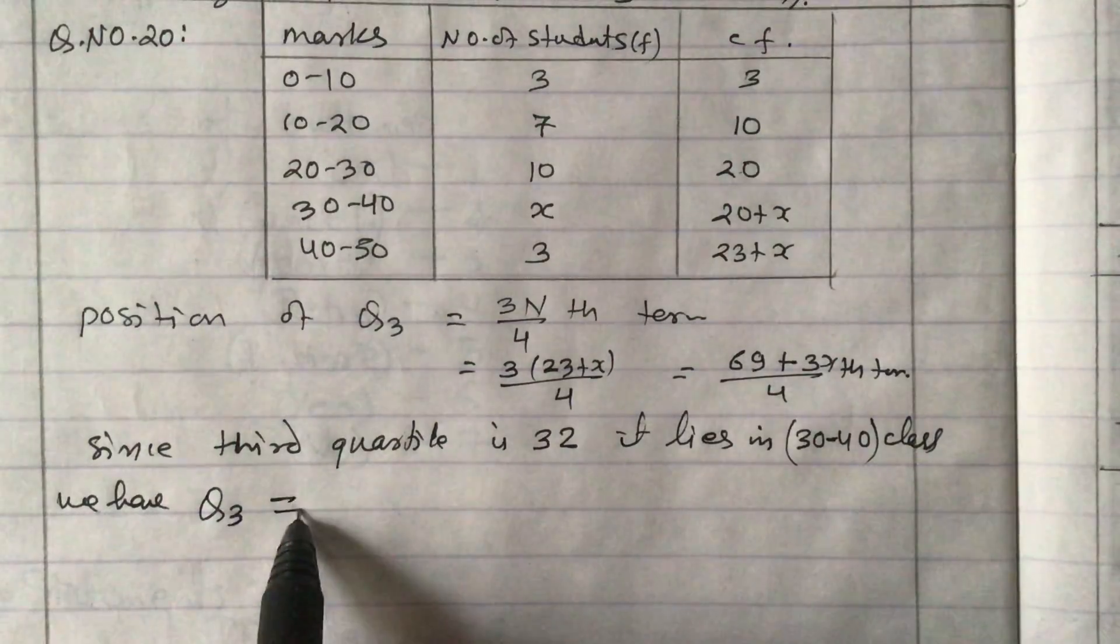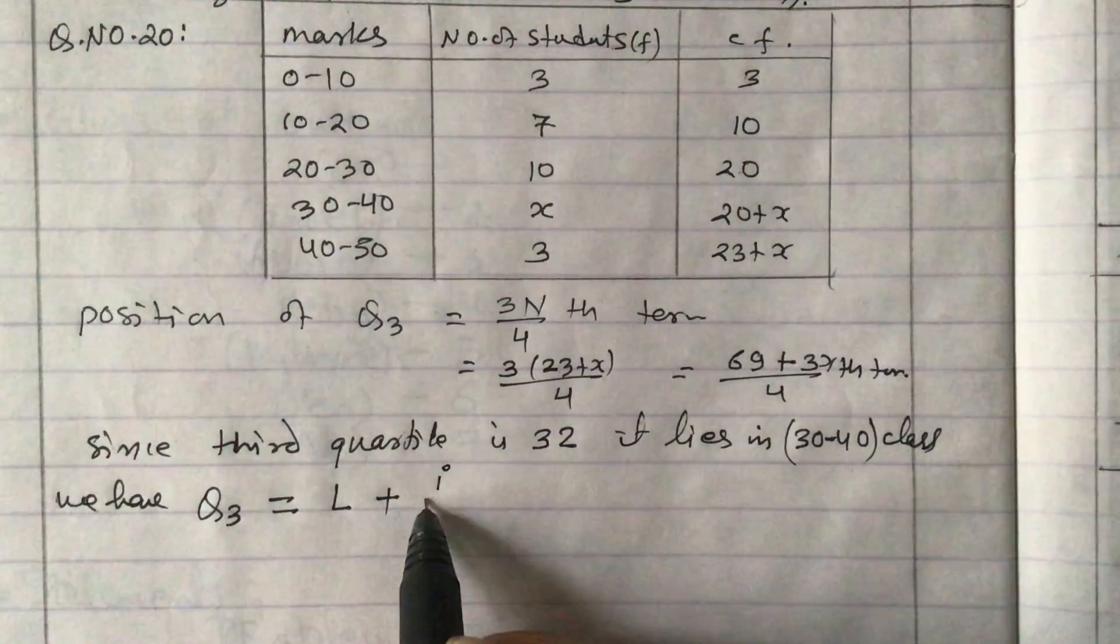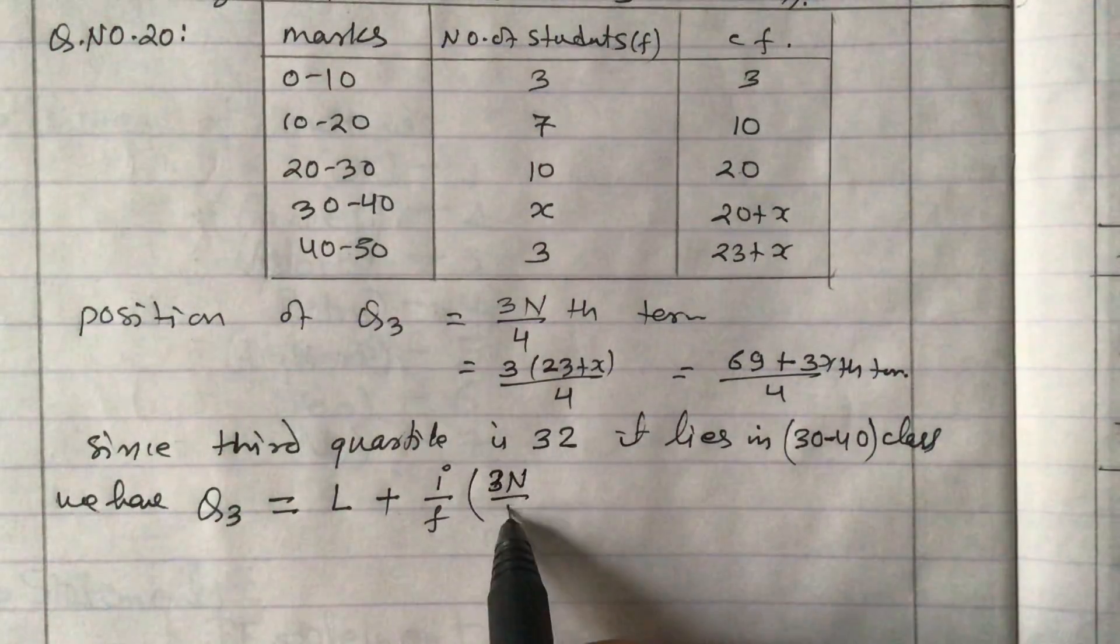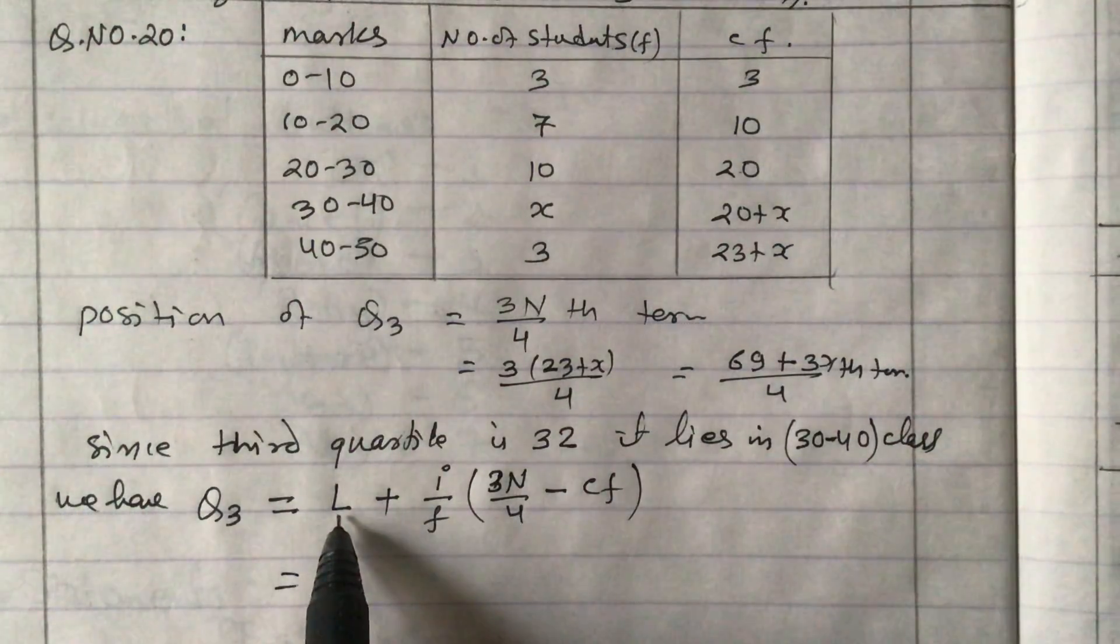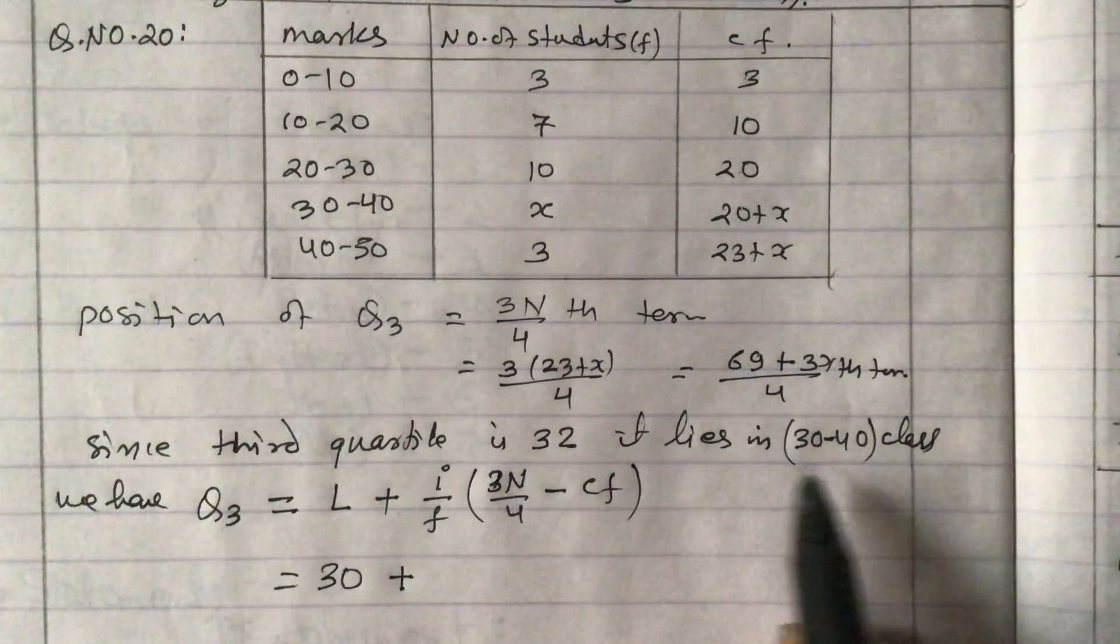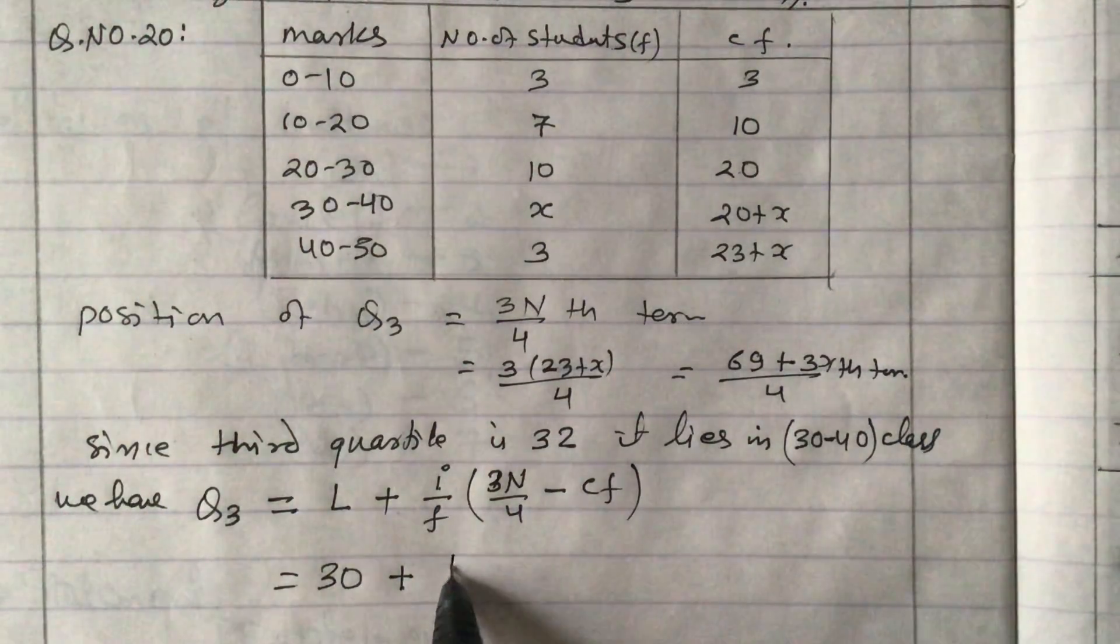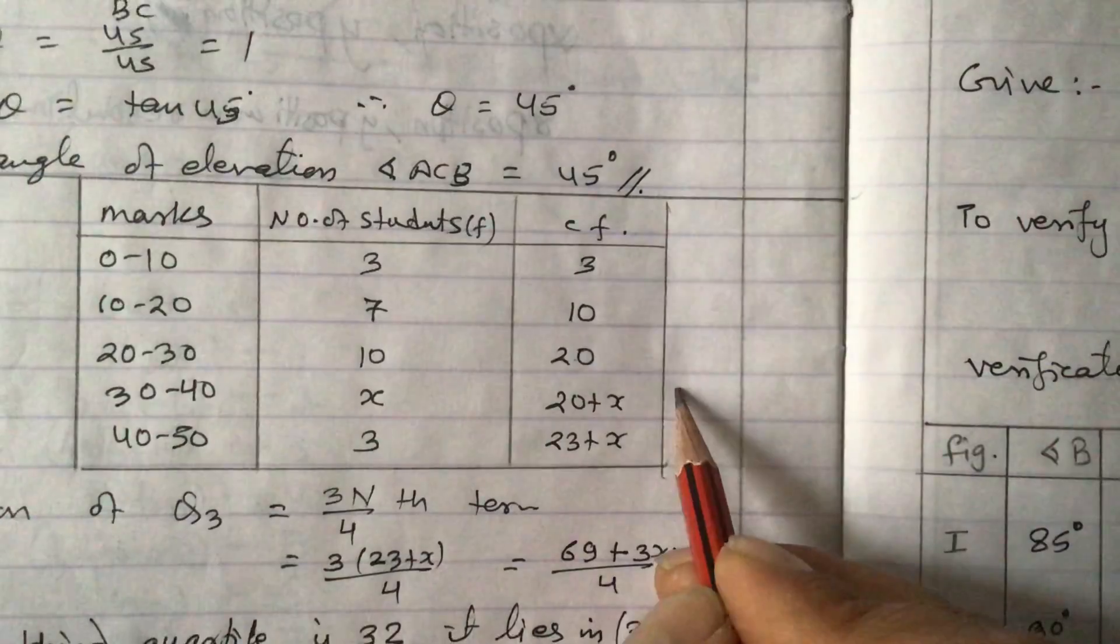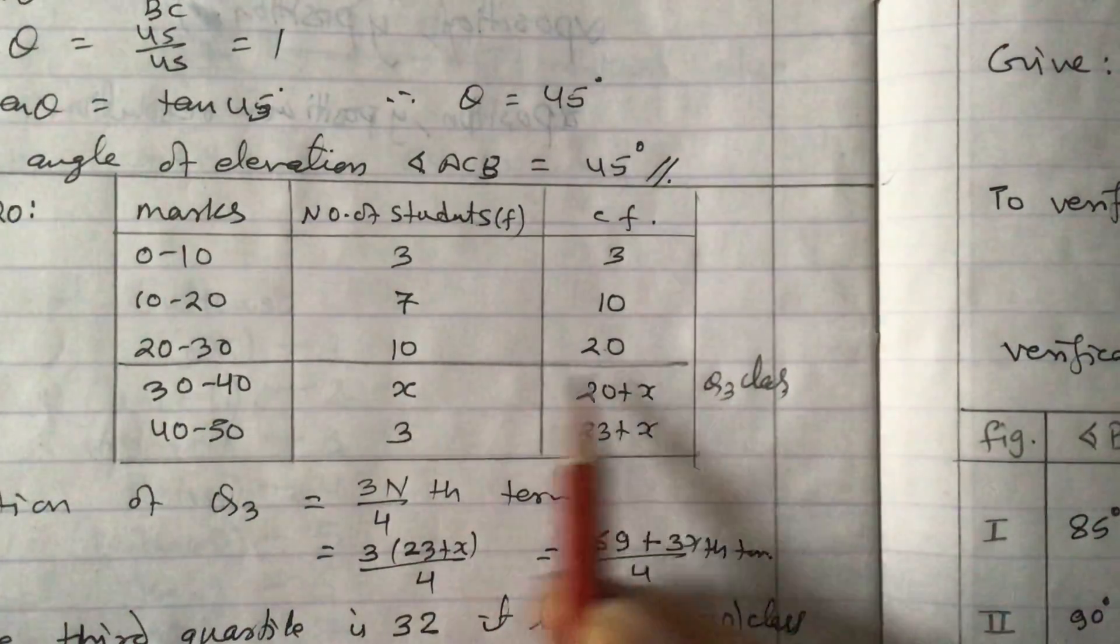Now the formula for Q3 is: Q3 equals L plus i by f bracket 3N by 4 minus cf. L is the lower limit here, which is 30, plus i. i is the width of the class 30 to 40, the difference between these two, that is 10.